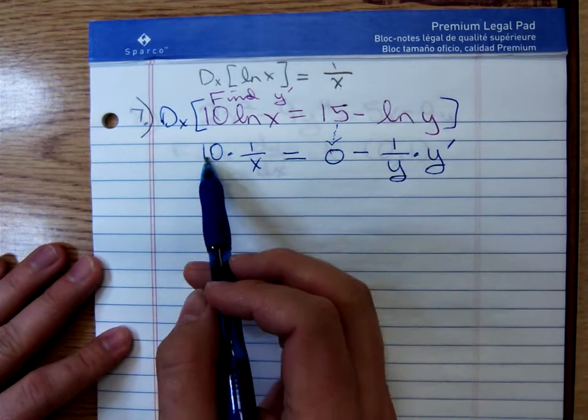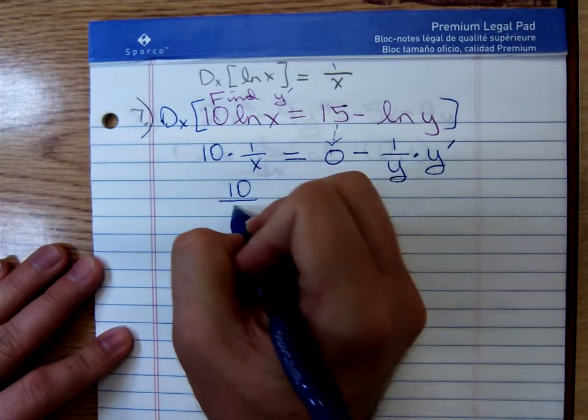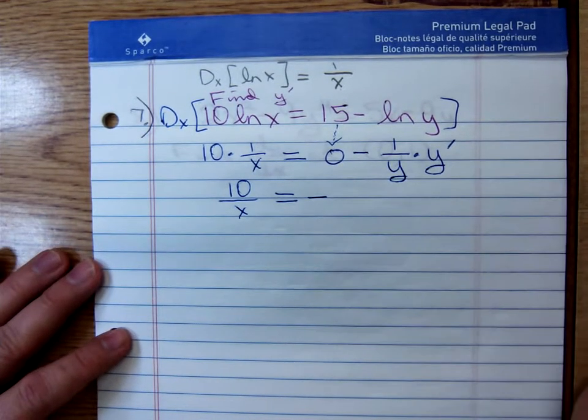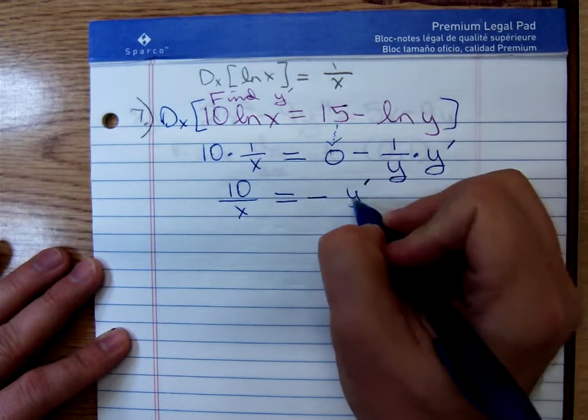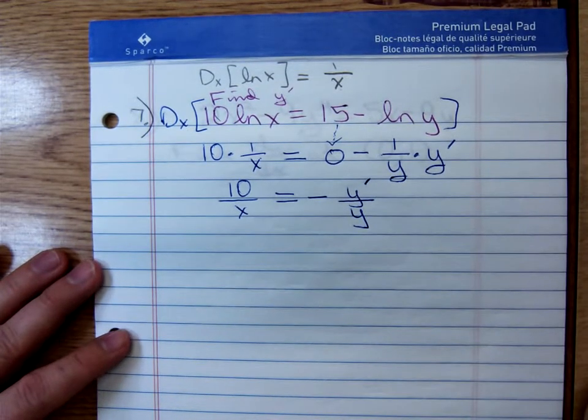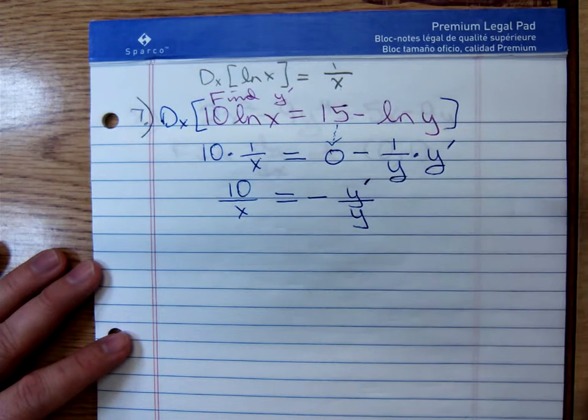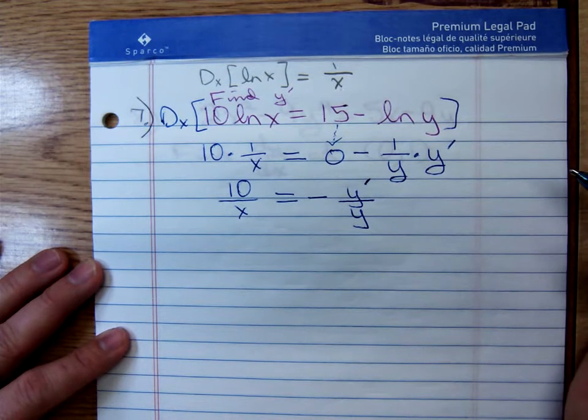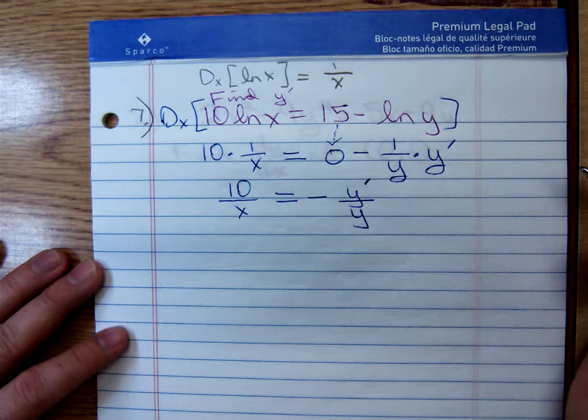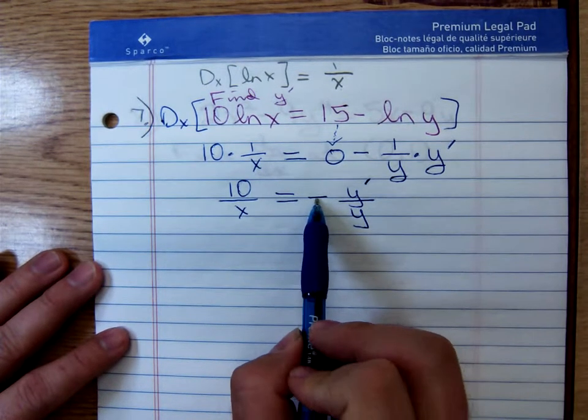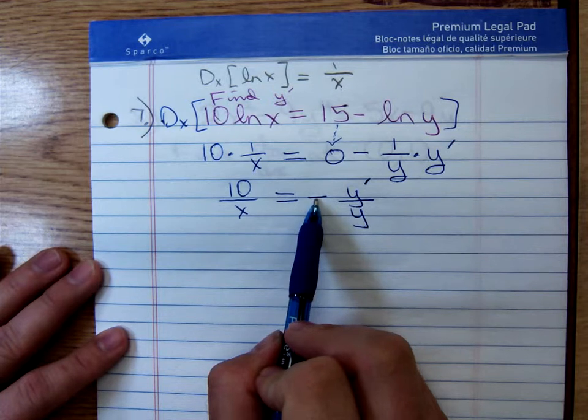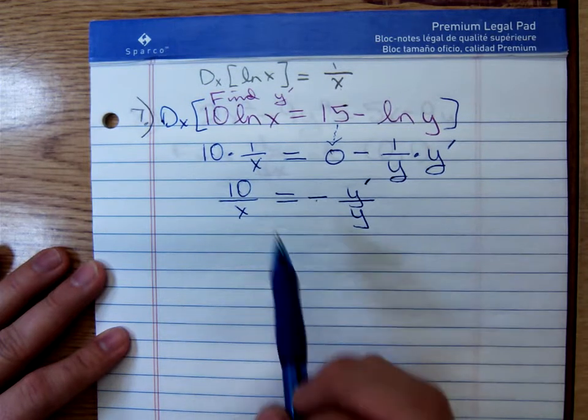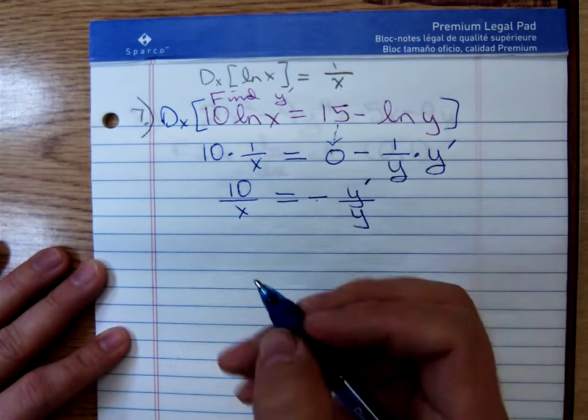So this is going to give us 10 times 1 over x. This is 10 over x. Equals. We'll have a negative. 1 over y times y' prime. I'd write that as a y' prime over y. I'm trying to solve for y' prime. I think I would multiply both sides by a, let's see. I recall in the past, students had some problems with that negative sign there. Maybe it'd be better if we just switch sides. The stuff on the right side, we move to the left. The stuff on the left side, we move to the right. Maybe I'd like that better.